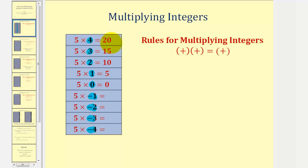We know five times four equals twenty, five times three equals fifteen, five times two equals ten, five times one equals five, and five times zero equals zero. As we continue to decrease the second factor by one, the pattern we see in the products should continue. Looking at the products, notice how as the second factor decreases by one, the product decreases by five each time.